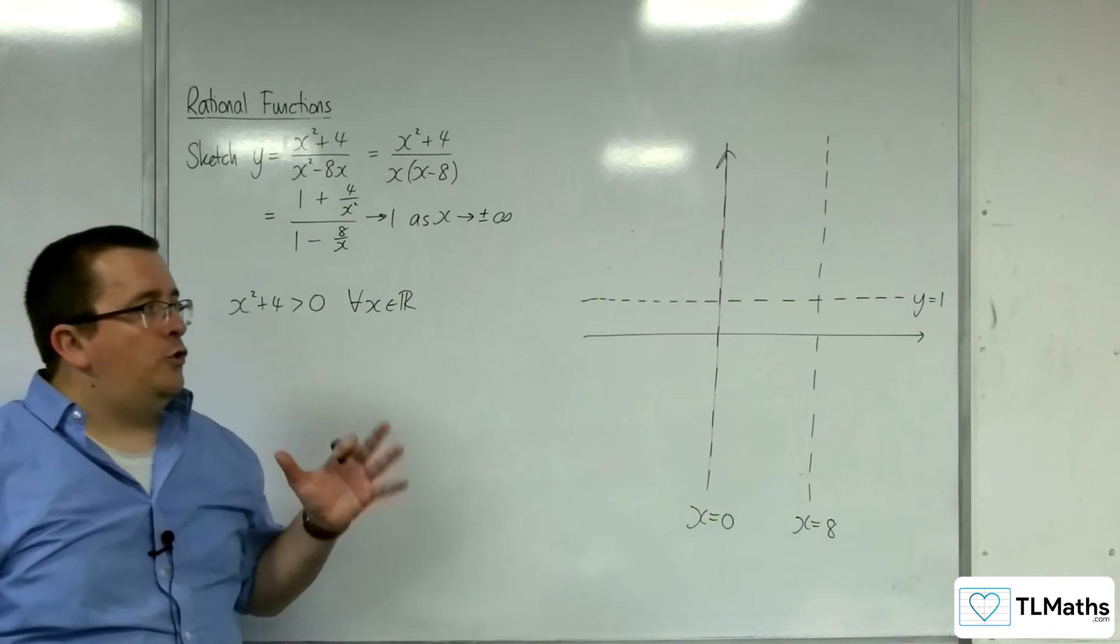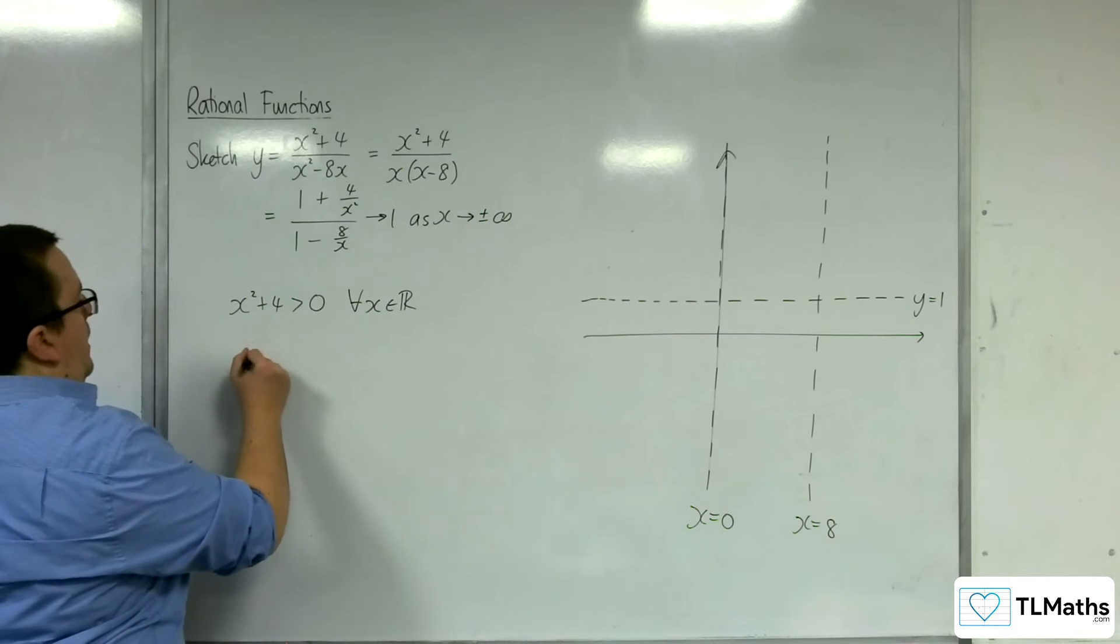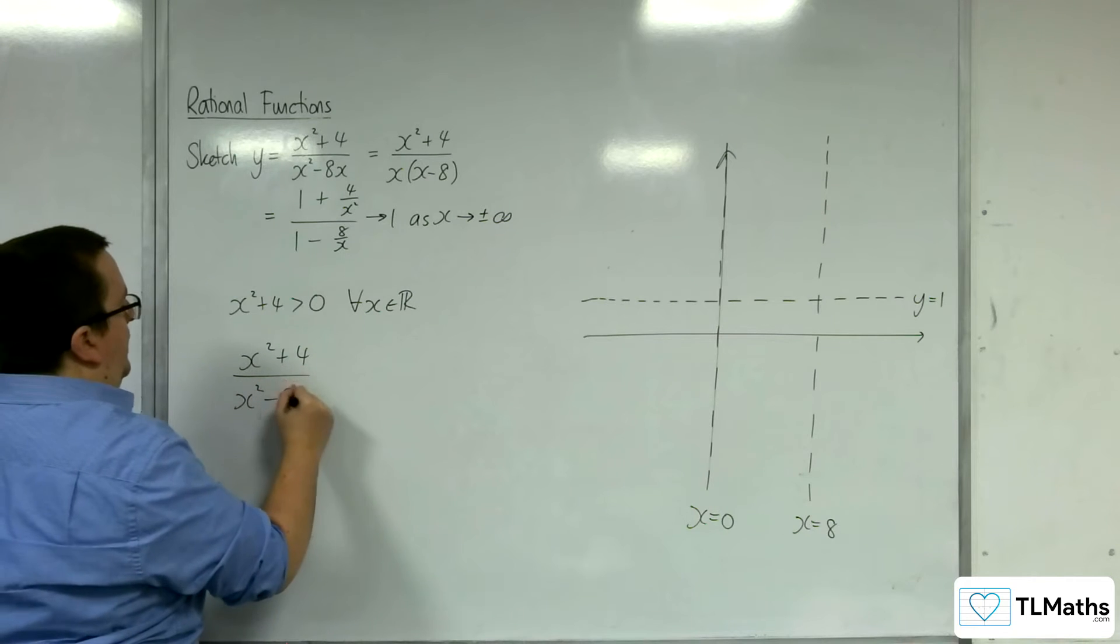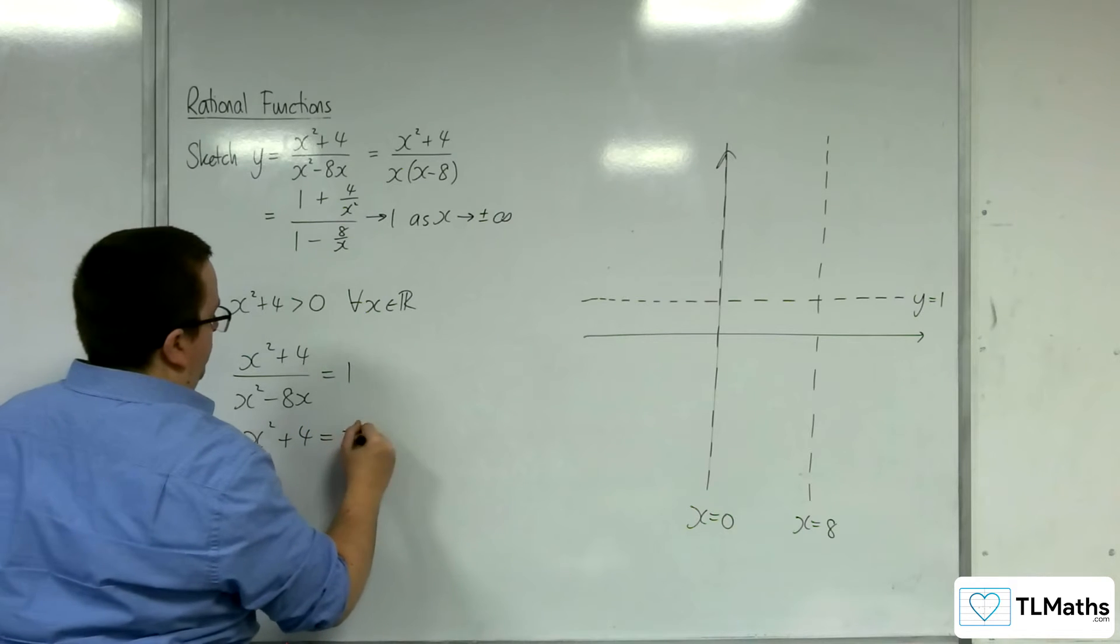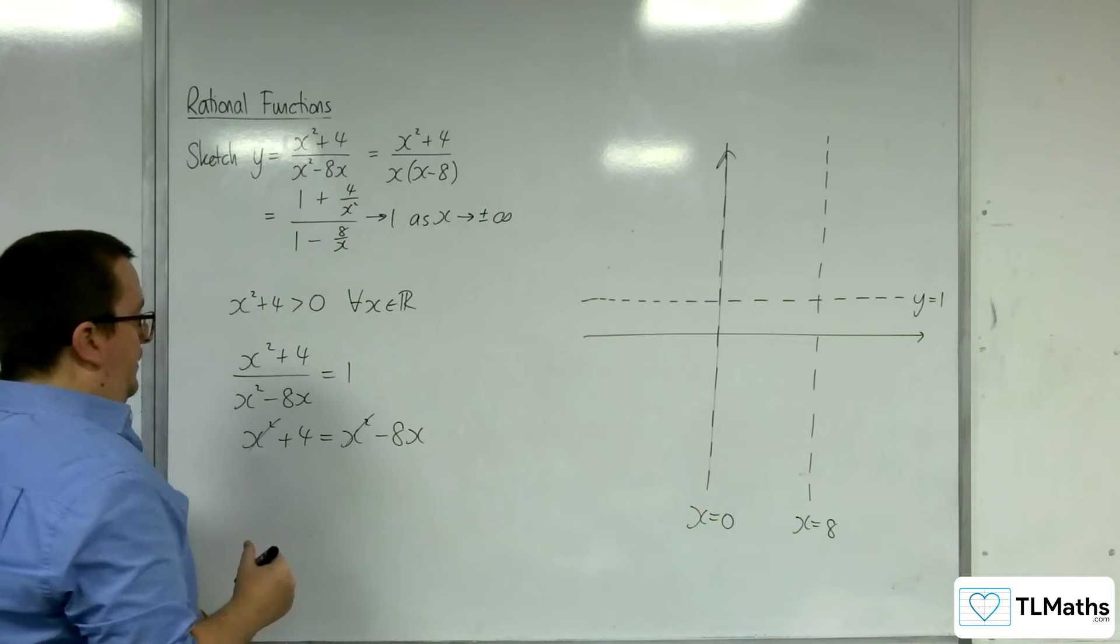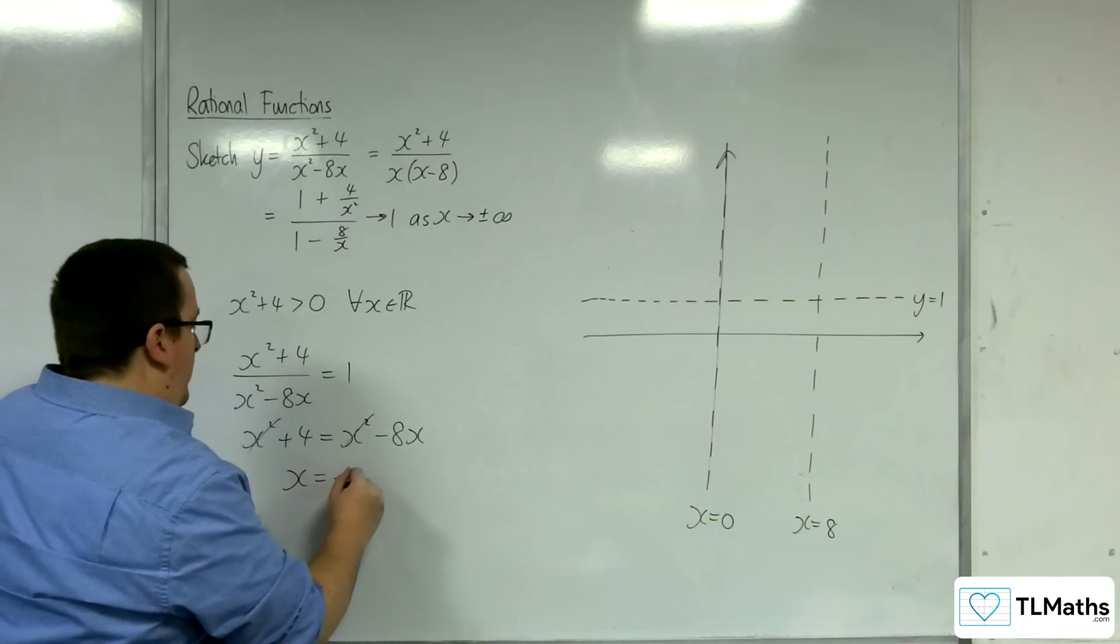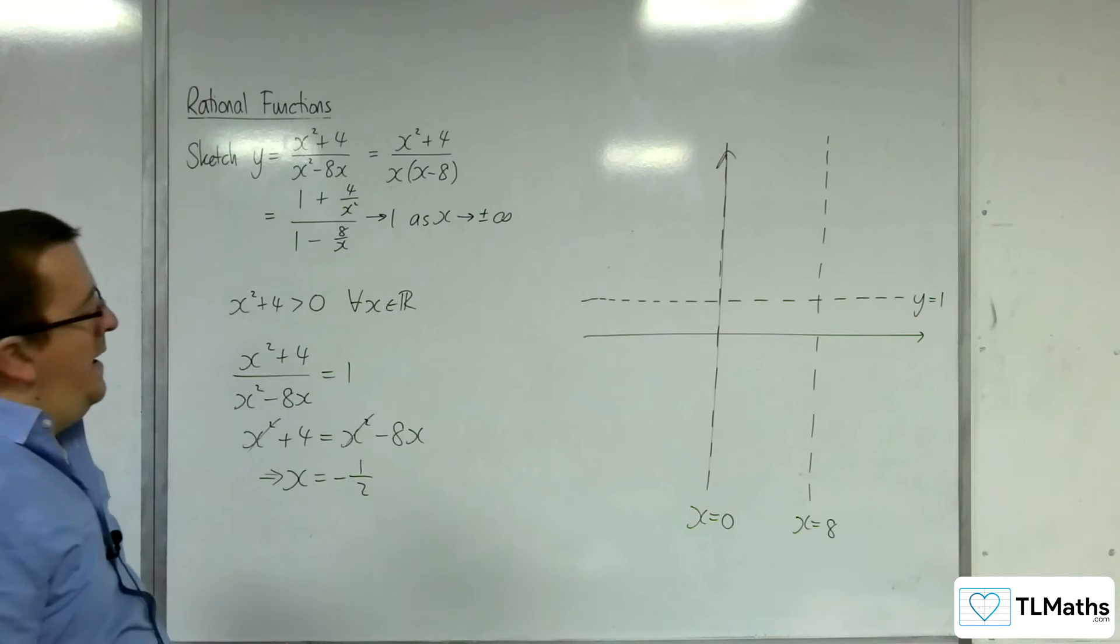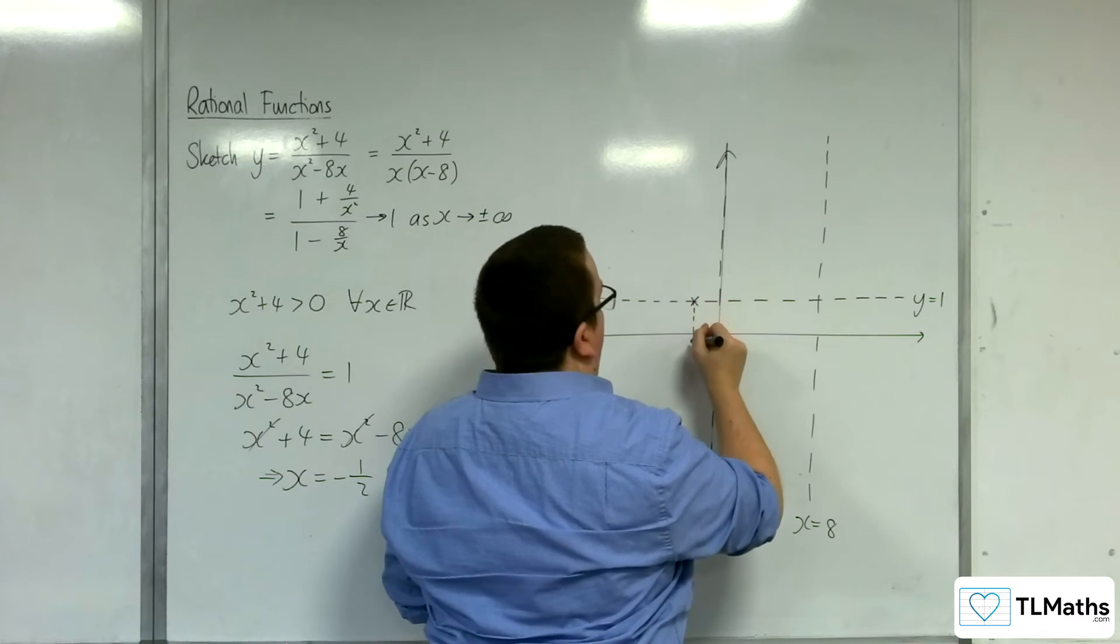Now we figure out where it's crossing the horizontal asymptote. So I'm going to put (x² + 4)/(x² - 8x) equal to 1. Multiplying up, I can take x² from both sides. Dividing both sides by -8, I get x = -1/2. So that is where we're crossing the horizontal asymptote, at x = -1/2.